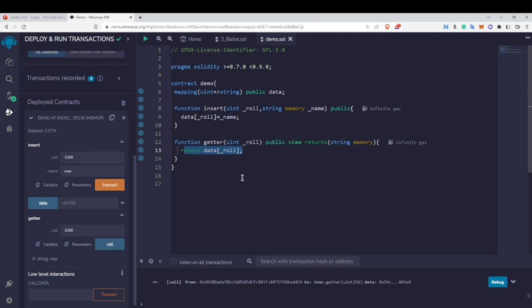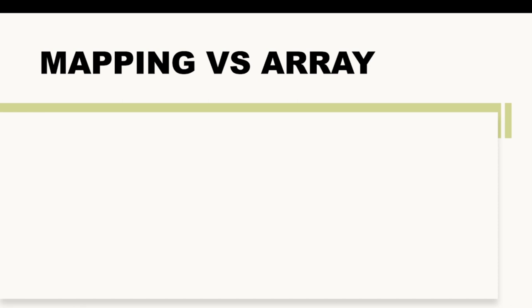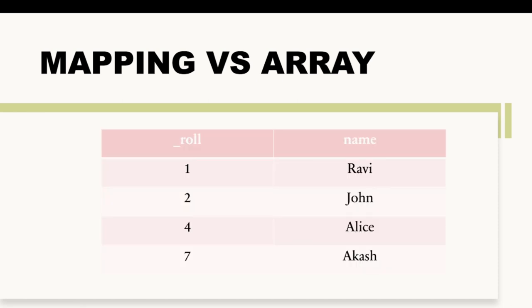Let us understand the difference between mapping and array. This is how our mapping looks: let's say we have roll number one, at roll number one we have stored the name John, and the same way all the other names are mapped to a roll number. This is how we create a mapping.